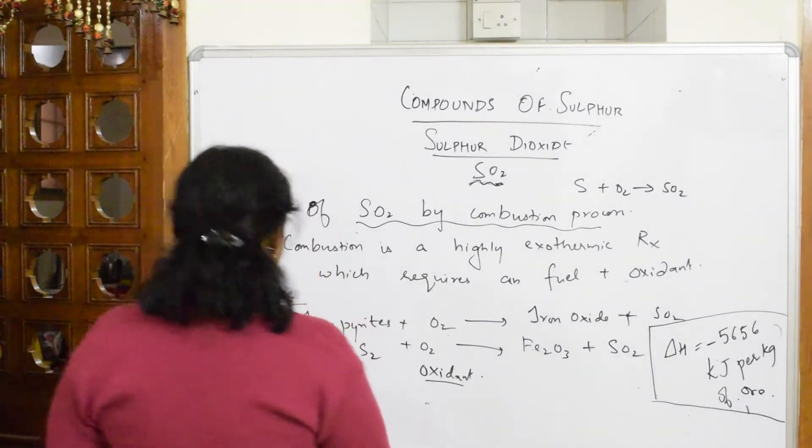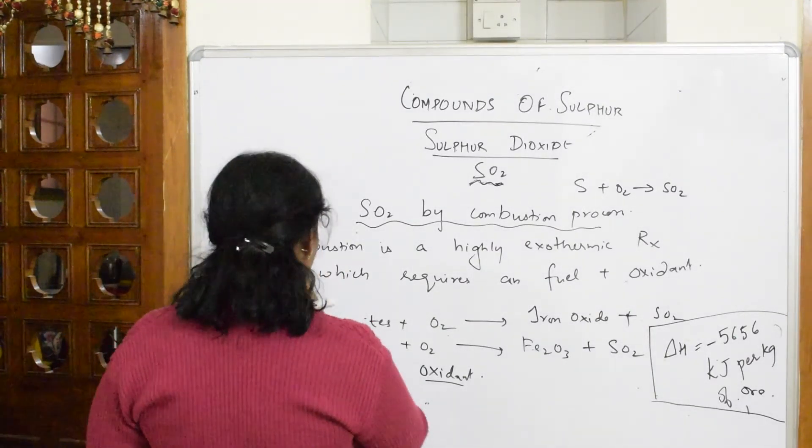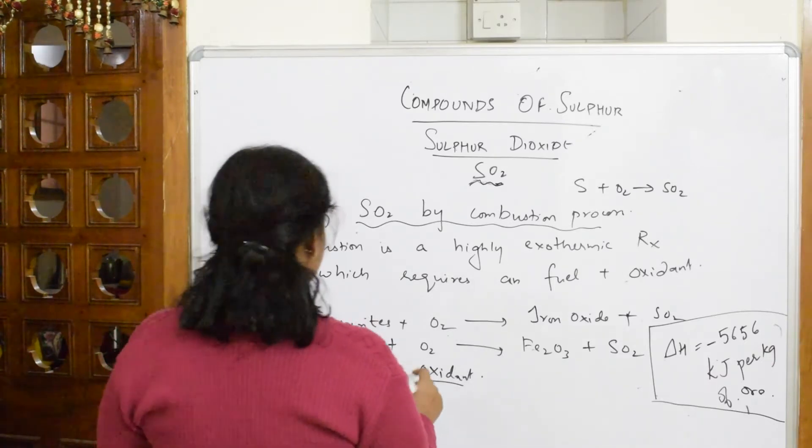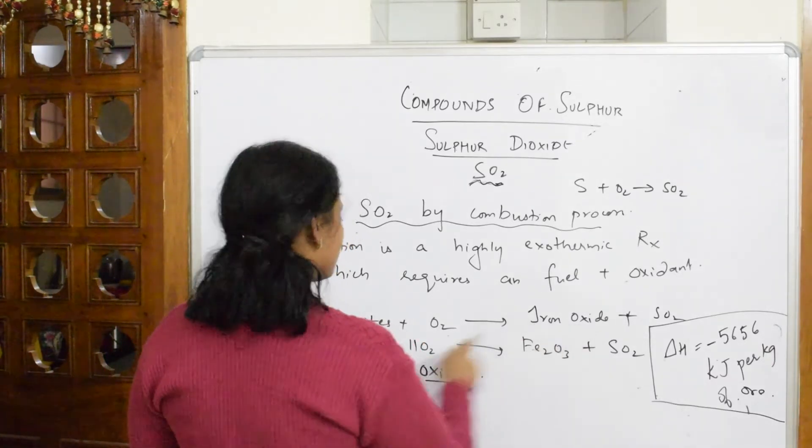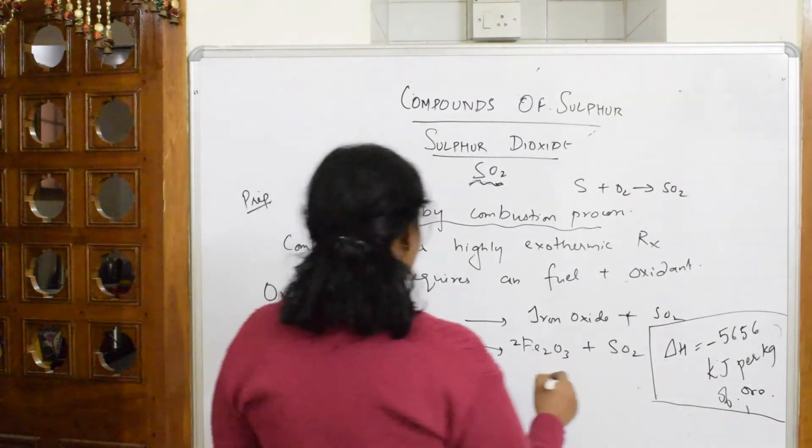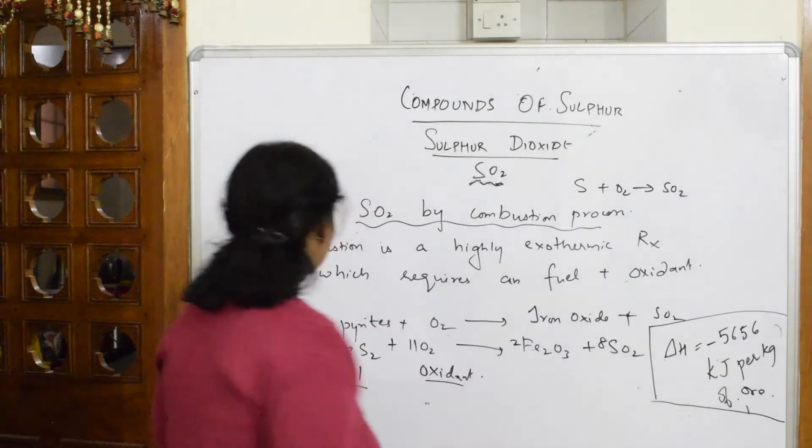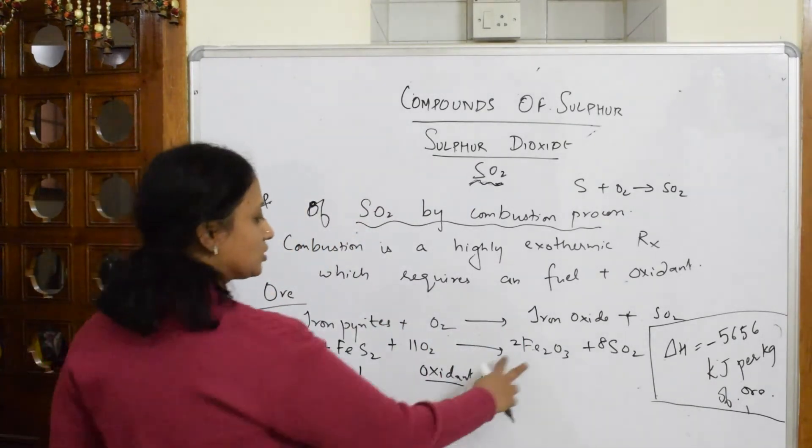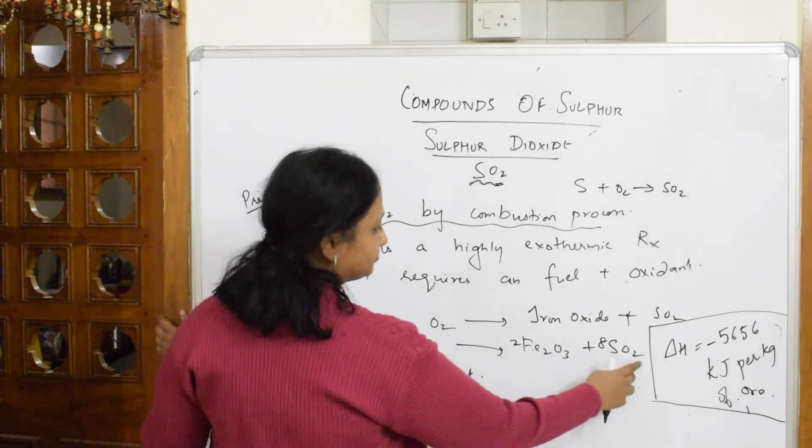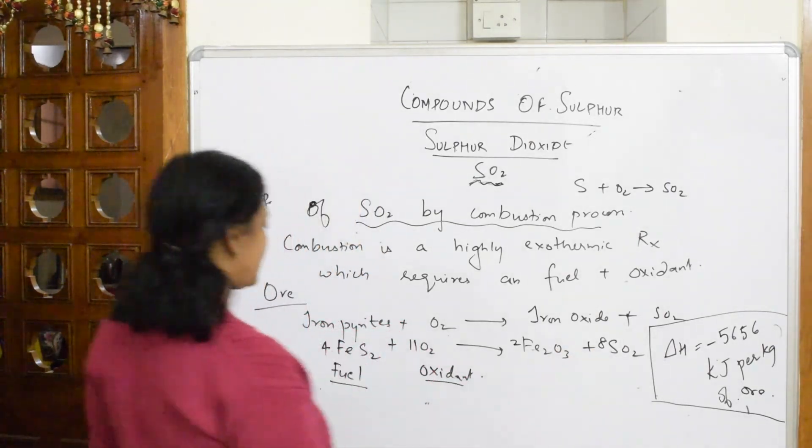Now let us balance this reaction. This is, if I take, this will become 4. This, if I have to write balanced, this will be 11. If I have to see oxygens, so this is again 2 because I've taken 4 here, and this will be 8. So let's see if it is balanced or not. The 2 is 4, this is 4. Oxygen: 6 and 8 is 22, 11—okay, it's balanced.